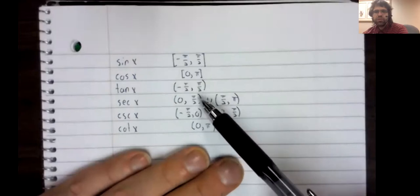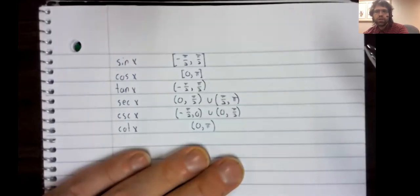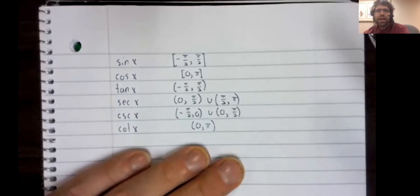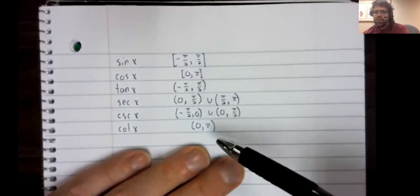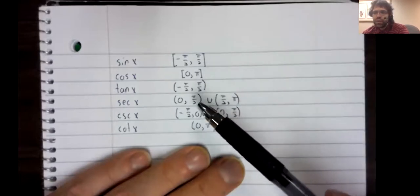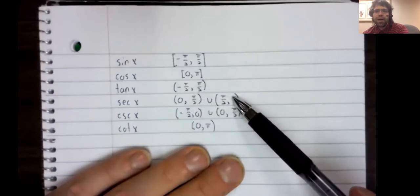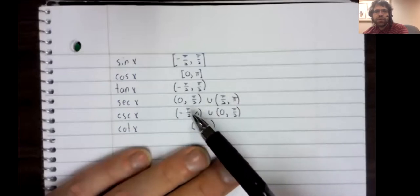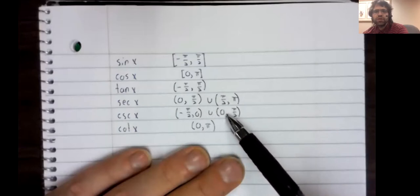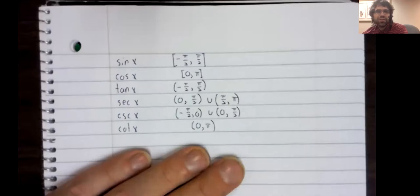The secant and the cosecant both have awkward restrictions — there is no way to help that. Any set that doesn't change their range is going to include an asymptote. So the secant goes from 0 to pi over 2 union from pi over 2 to pi. The cosecant from negative pi over 2 to 0 union from 0 to pi over 2. And then the cotangent has a nice interval, just from 0 to pi.